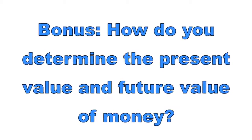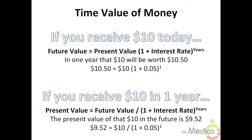Bonus: how do you determine the present value and future value of money? Assume you receive $10 today and the interest rate on your savings account is 5%, and you want to determine the value of that $10 in one year. The future value formula is: future value equals the present value times (1 plus the interest rate) to the power of however many years you are calculating. In one year, that $10 will be worth $10.50 — that is, $10 times (1 + 0.05) to the first power.